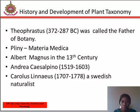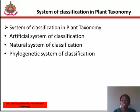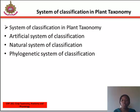Now let's move on to the systems of classification in plant taxonomy. One: artificial system of classification — in the artificial system, only one or at most a few characters are selected arbitrarily, and plants are arranged into groups according to those characters. As a result, closely related plants are often placed in different groups while unrelated plants are placed in the same group, because of the presence or absence of a particular character.